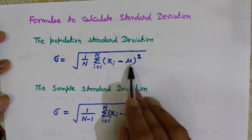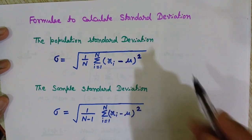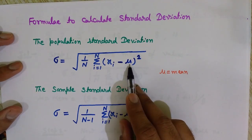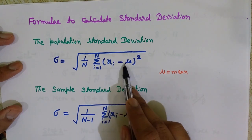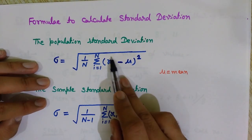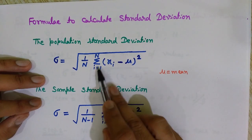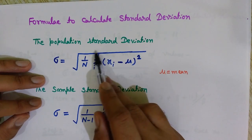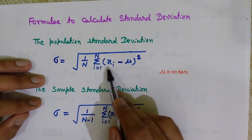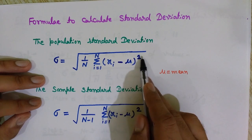Let's understand what the formula is saying. It is a square root. First, mu is the mean value — the average. We calculate the mean value of the numbers. Then, xi minus mu means i is varying from 1 to n. We take the first term x1 minus mu squared, x2 minus mu squared, and so on — if there are n terms in the set, the summation runs from 1 to n.